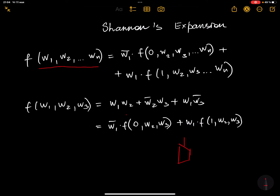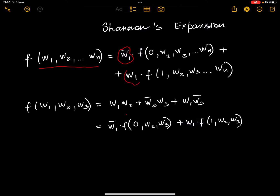In Shannon's expansion, if you're asked to use it to build a circuit using a multiplexer, you have to identify — or choose — the selectors before building the multiplexer. In this particular case, I've chosen w1 as my selector.